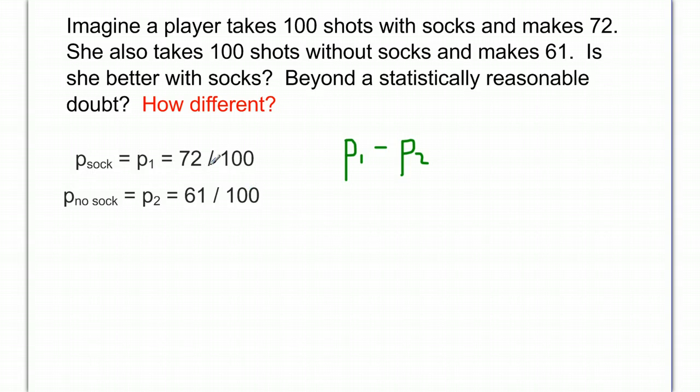Since these are pretty simple numbers here, 72 out of 100, it's easy to find the proportion. If we were to calculate that out, that would be 0.72. And here, 61 out of 100 would be 0.61.